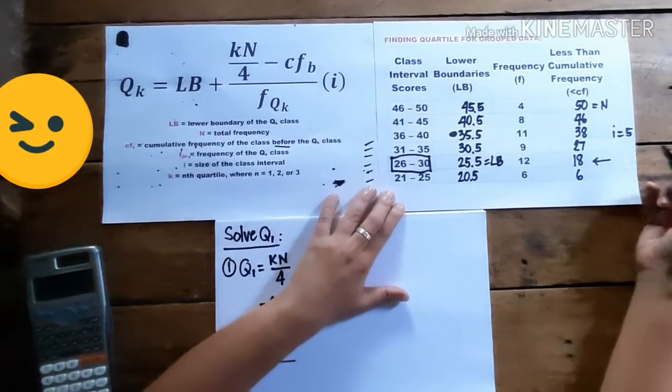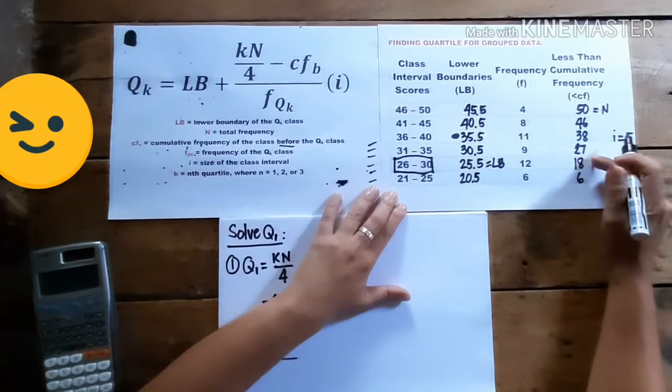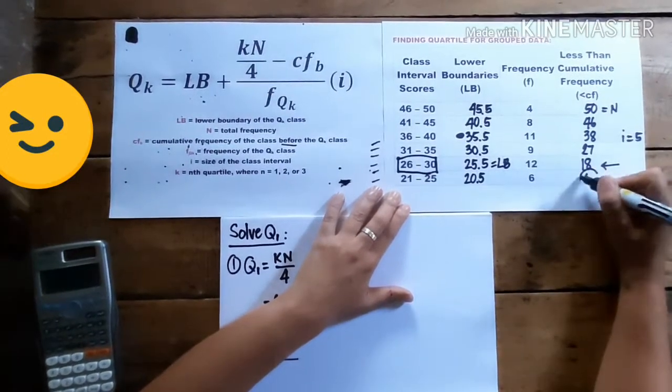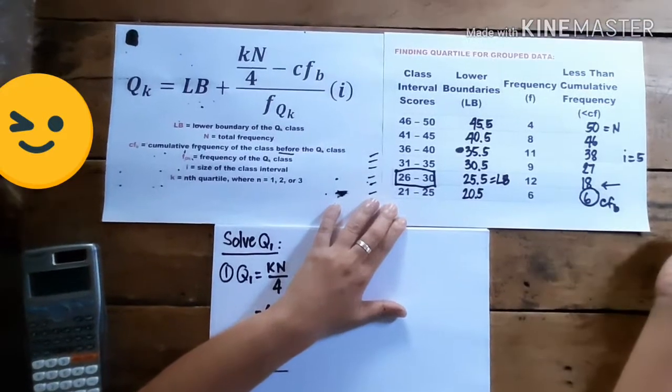Okay, now, this is the cumulative frequency of quartile 1, before this 18. So that means our CFB is this one. Okay, before.